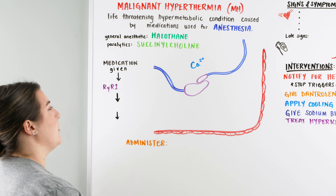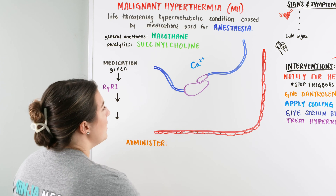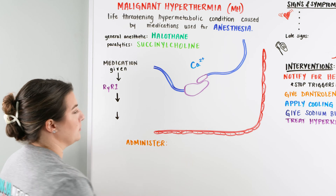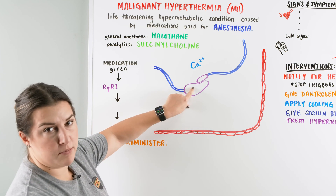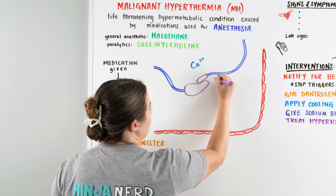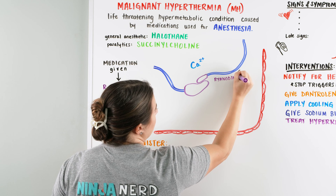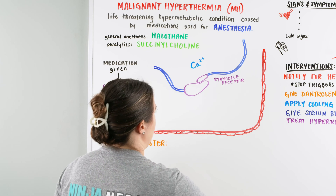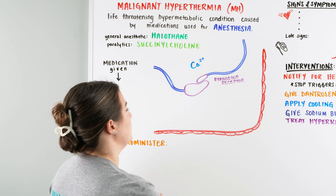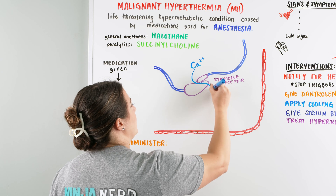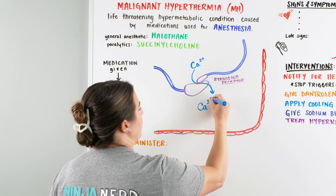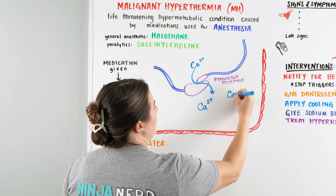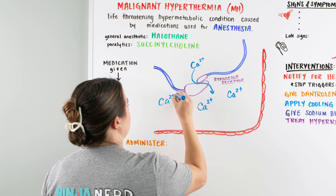When we talk about the cause, I have this drawing here. We have our sarcoplasmic reticulum and our skeletal muscle. What we're looking at is a ryanodine receptor — its job is to sense calcium and open up, allowing calcium to come into our muscle so the muscle can contract. Calcium causes contraction, so the ryanodine receptor opens, calcium passes through, and we have a muscle contraction.